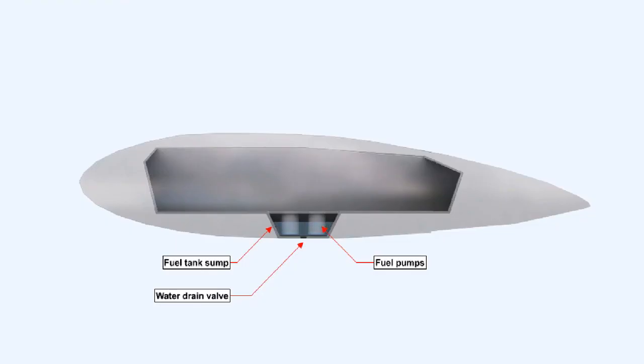If the fuel can be allowed to settle after replenishment, then the water droplets, being heavier than the fuel, will fall to the bottom of the tank and can then be drained off through the water drain valve which is situated in the lowest part of the fuel tank.